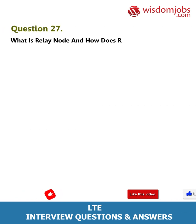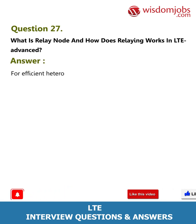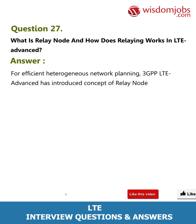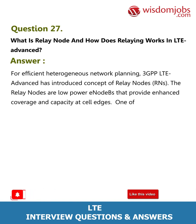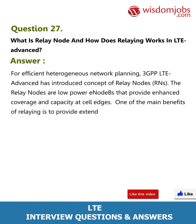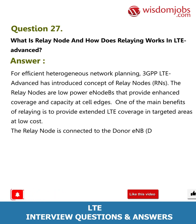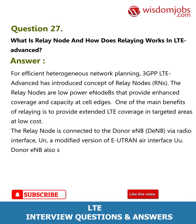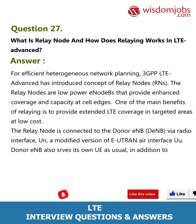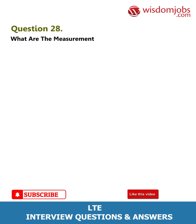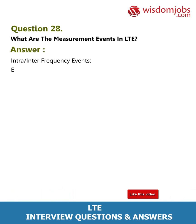Question 27: What is a relay node and how does relaying work in LTE Advanced? Answer: For efficient heterogeneous network planning, 3GPP LTE Advanced has introduced the concept of relay nodes (RNs). Relay nodes are low-power eNodeBs that provide enhanced coverage and capacity at cell edges. One of the main benefits of relaying is to provide extended LTE coverage in targeted areas at low cost. The relay node is connected to the donor eNB (DeNB) via radio interface Un, a modified version of the E-UTRAN air interface Uu. The donor eNB also serves its own UEs as usual, in addition to sharing its radio resources for relay nodes.